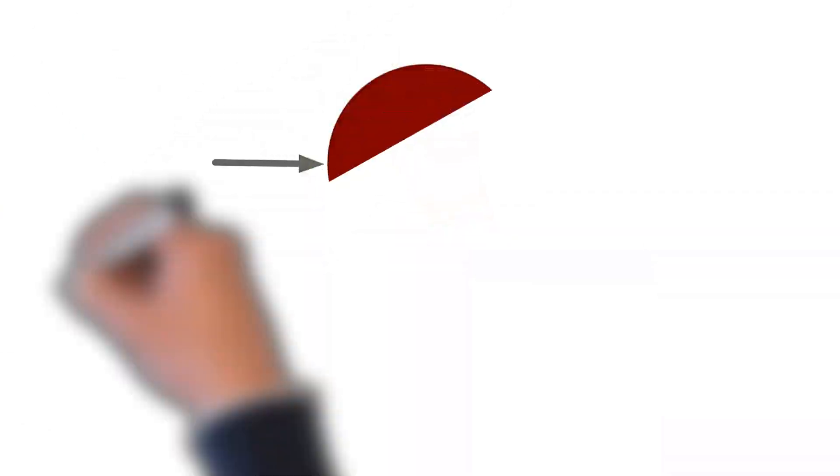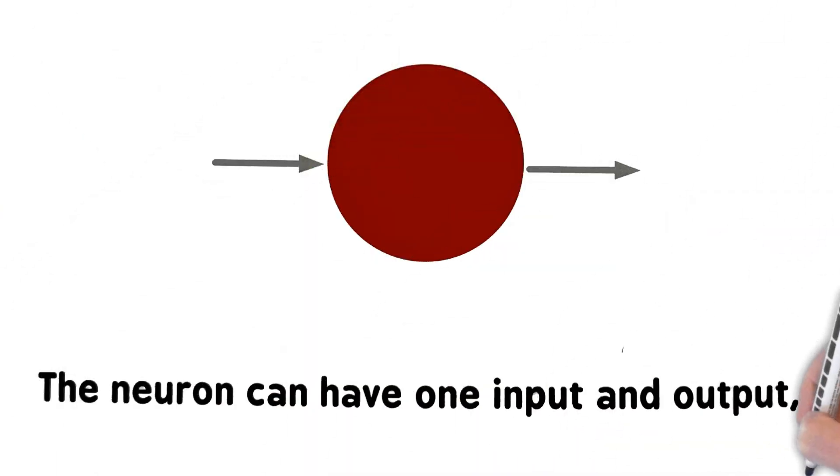The neuron can have one input and output, or many.